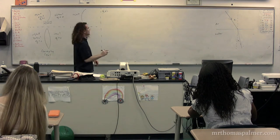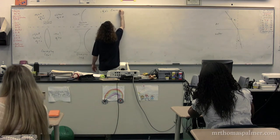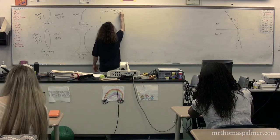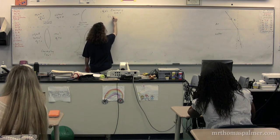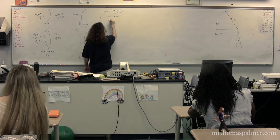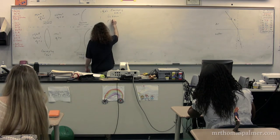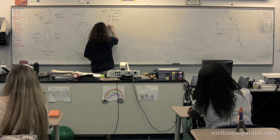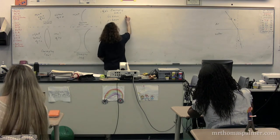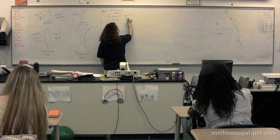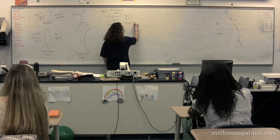We're going to start out with an example with a converging lens. The focal length is going to be 2.0 centimeters, the object distance is going to be 5.0 centimeters, and the object height is going to be 1.5 centimeters. We're going to look for all the normal things: the image distance, the magnification, and the three image characteristics.